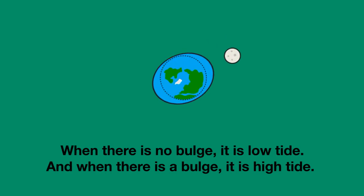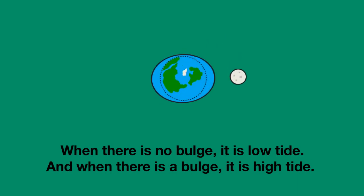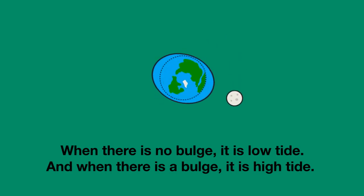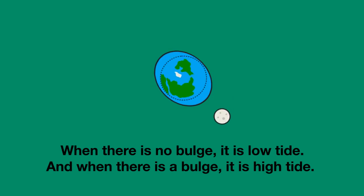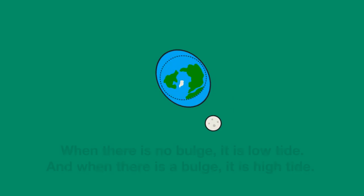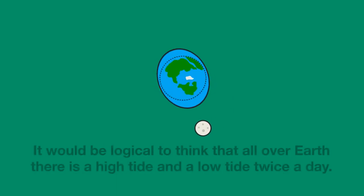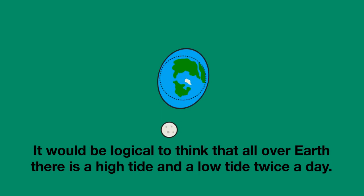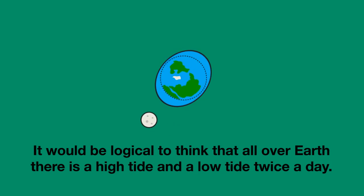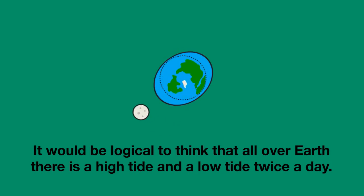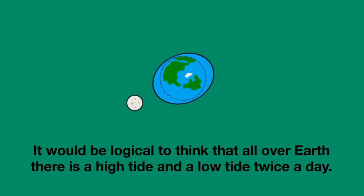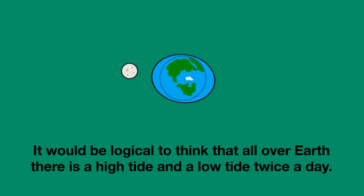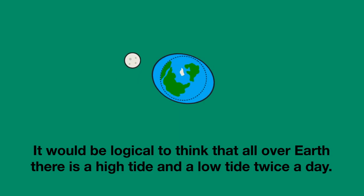When there's no bulge, it's low tide. And when there is a bulge, it's high tide. Earth takes 24 hours to rotate, so it would be logical to think that all over Earth there's a high tide and a low tide every 12 hours, so twice a day.